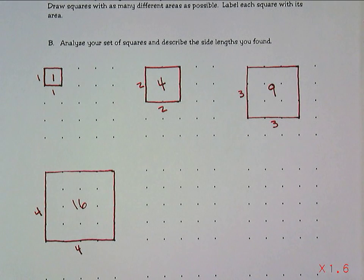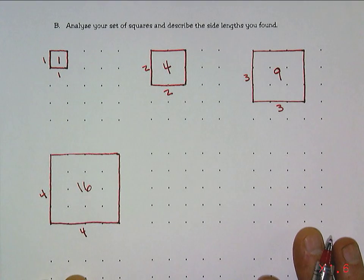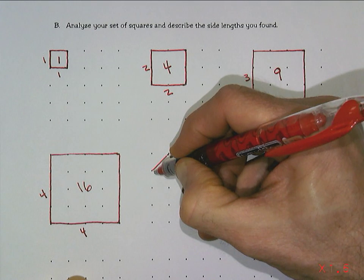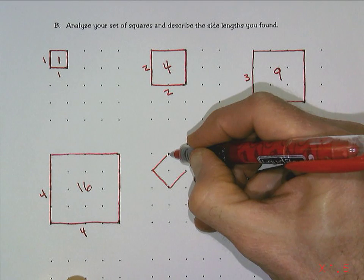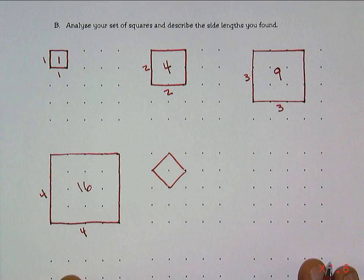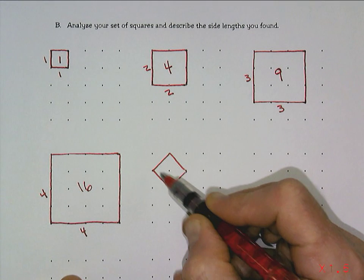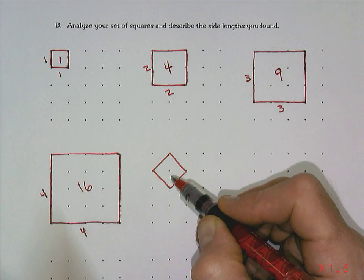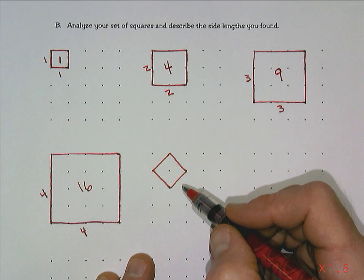At this point you might say that's all the squares we can draw, but that's not true — you can actually draw more squares. Here's one: we can tilt the lines; they don't have to be straight up and down. So we still have a square, but this is a little harder because the side lengths are no longer whole units. Some people might think this is one unit, but if you look at it, you can see it's not one unit when you connect them diagonally.